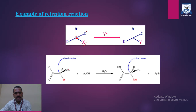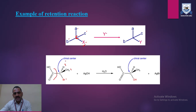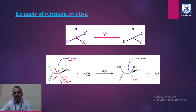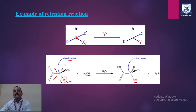Here we have an example. You can see a carbon that has four different substituents — 1, 2, 3, and 4 — making it a chiral carbon, as the chiral center is mentioned. It is going to react with silver hydroxide in the presence of water. The bromine group is relieved when the hydroxyl group approaches the same position, so the hydroxyl group is substituted at the same position where bromine was previously present. We can say the product has the same configuration as the substrate — again, a good example of retention of configuration.